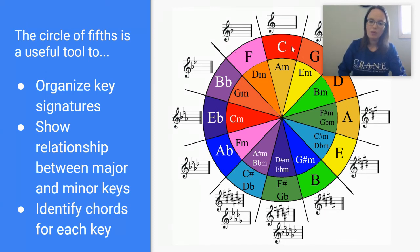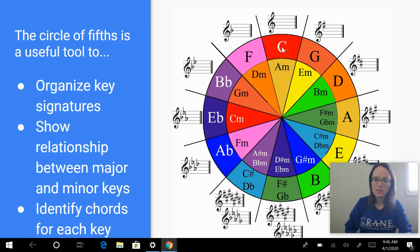Especially in pop music, you'll hear it a lot. And when you look at the circle of fifths, the two chords or keys surrounding that key that you're in are the ones that tend to be used quite a bit. So in the key of C, you hear a lot of G chords and a lot of F chords.